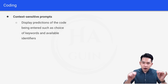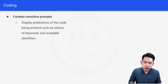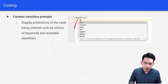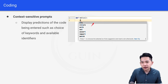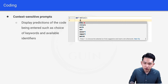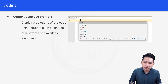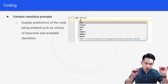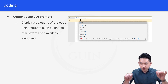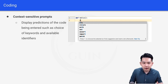Let's look at this example — a definition of a hello function in Python. When I type 't', it displays a choice of keywords I can use, such as try, return, with, not, assert, import, or match. This is context sensitive prompts.